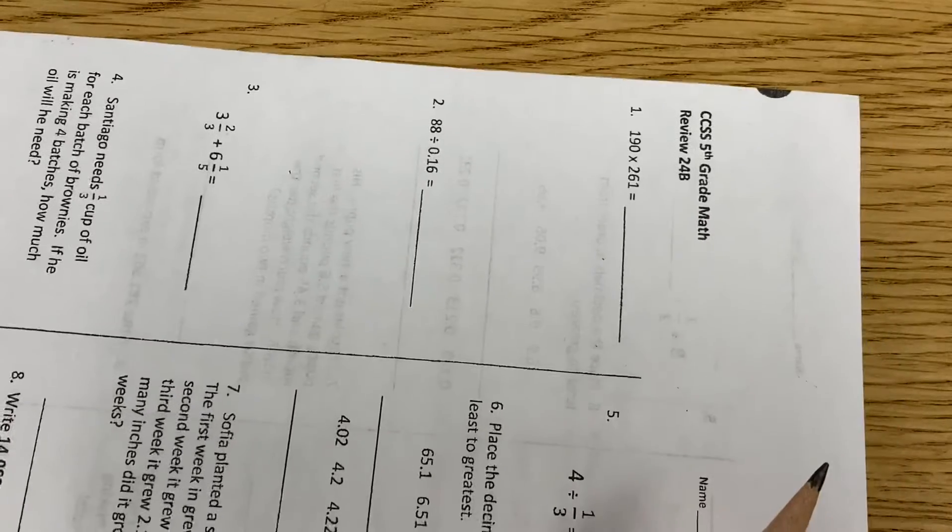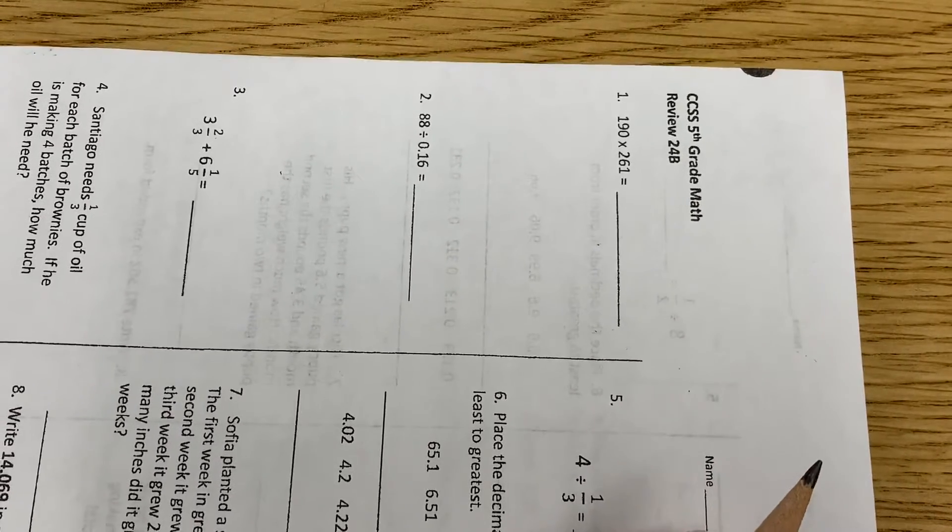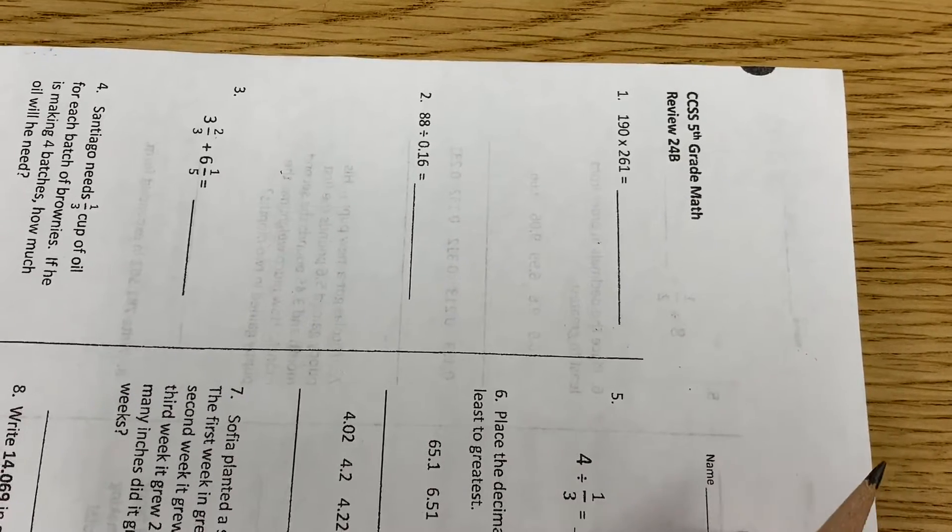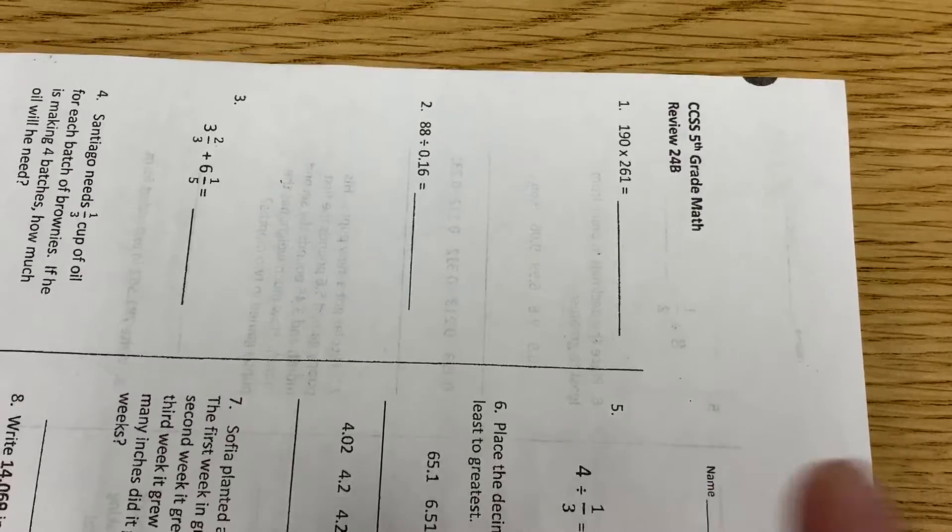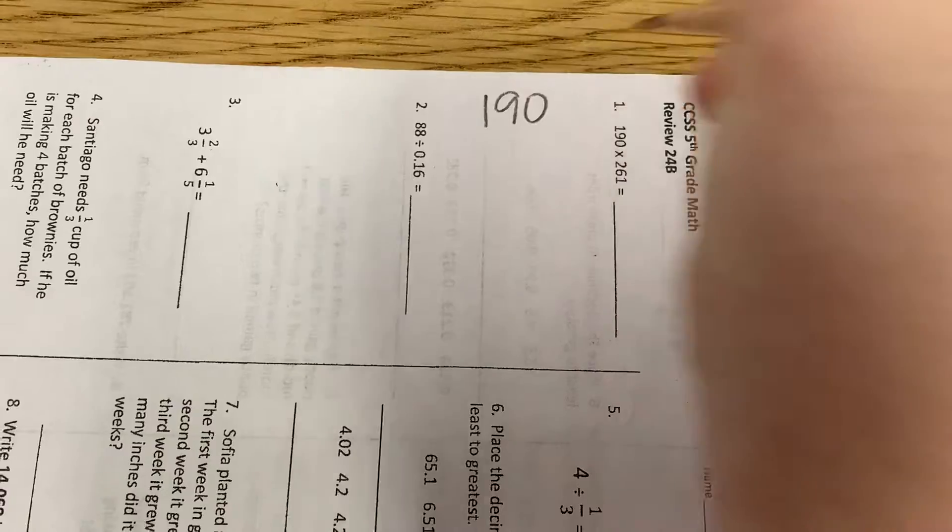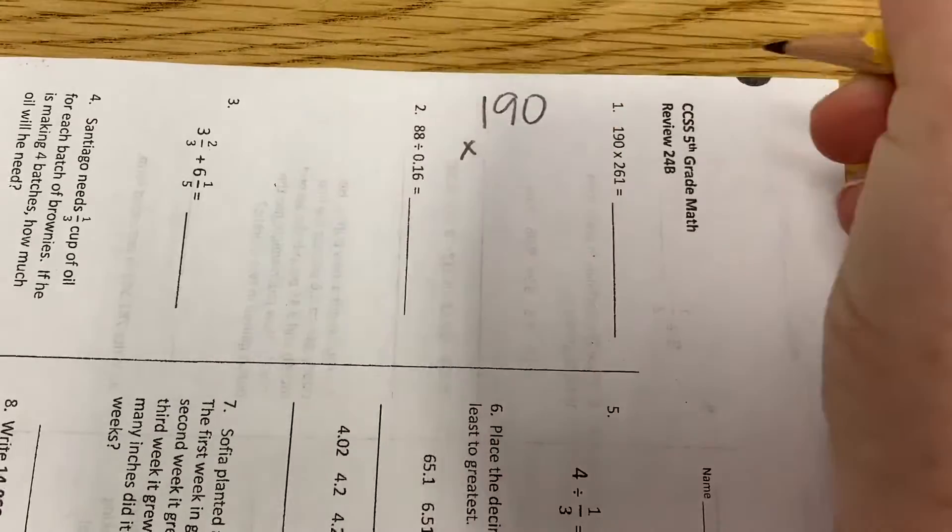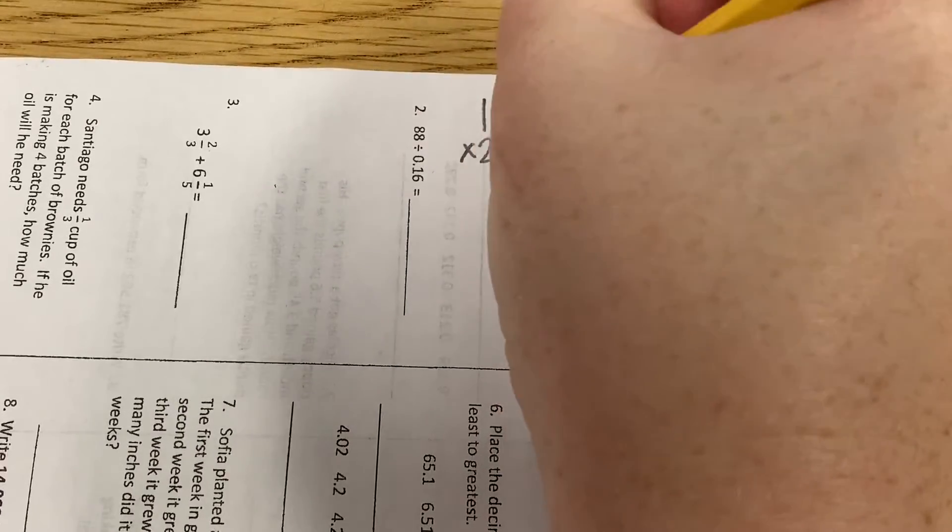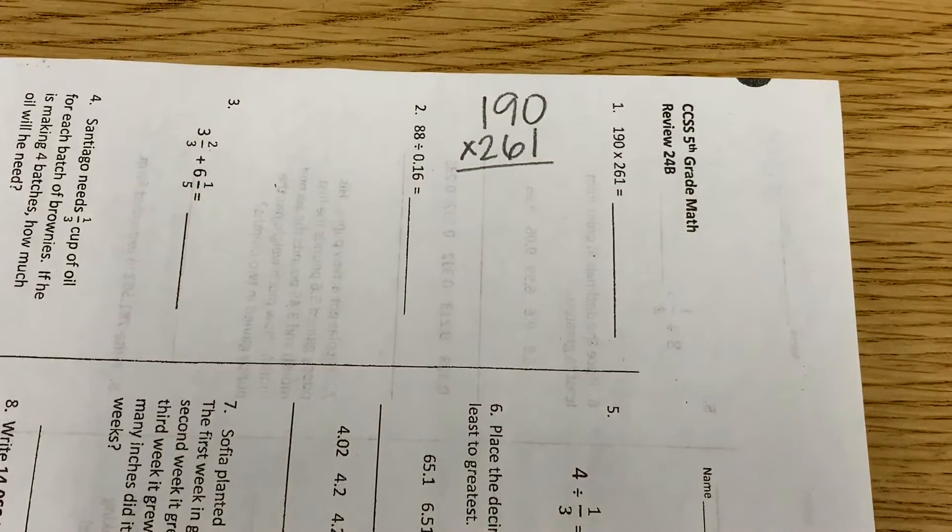Okay, so I'm going to turn my paper sideways. Does it matter which number goes on top or which number goes on bottom? No, because they both have how many digits? Three. Okay, so I'm just going to go ahead and put them like they are. 190 times 261.